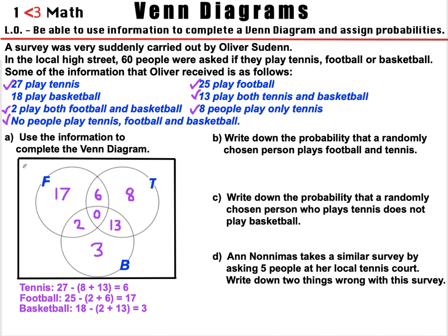Now, the question tells us there are 60 people in total, so we need to check these numbers add up to 60 — and they don't quite. There's a number of people who don't play football, tennis, or basketball. So we do 60 take away 3, 2, 13, 17, 6, and 8 — that's 60 take away 49 — which leaves 11 people who don't play any of the three sports. That completes the Venn diagram.